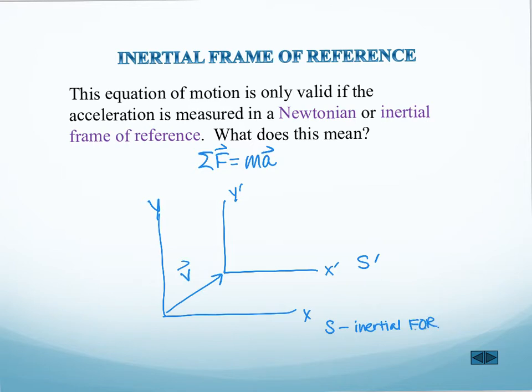we're going to use this shorthand because I don't feel like keep writing it. Then if frame of reference S is an inertial frame of reference, and frame of reference S prime is moving with a constant velocity relative to frame of reference S, then this is inertial as well.